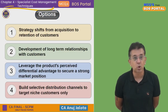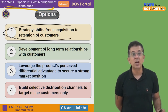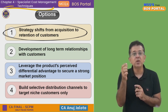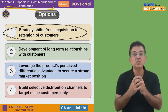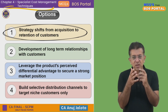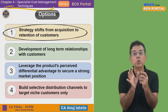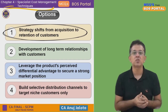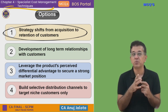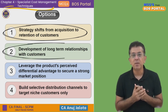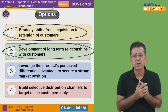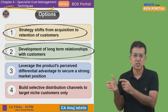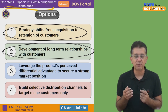In the growth stage, which strategy should NOT be adopted? Option one — strategy shifts from acquisition to retention of customers — is appropriate because after growth comes maturity with intense competition, and you must make extra efforts to retain the customers you already have. Option two — development of long-term relationships with customers — is almost an extension of option one. Try to have good relationships with customers so they remain with you even in the next stage, ideally even into the declining stage if your service is very good.